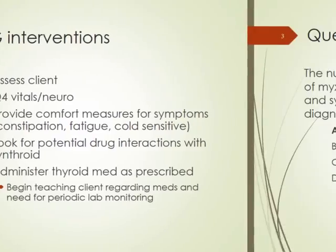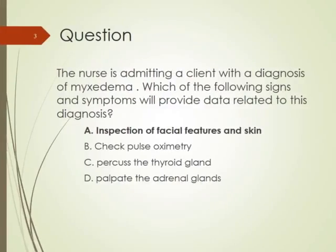The nurse is admitting a client with a diagnosis of myxedema coma. Which of the following actions and symptoms would provide data related to this diagnosis? Inspection of facial features and skin is relevant — they have that swelling, maybe some periorbital edema, and some neck swelling related to a goiter. Checking pulse ox is irrelevant, we don't percuss a thyroid gland, and palpating the adrenals is definitely an eliminator.